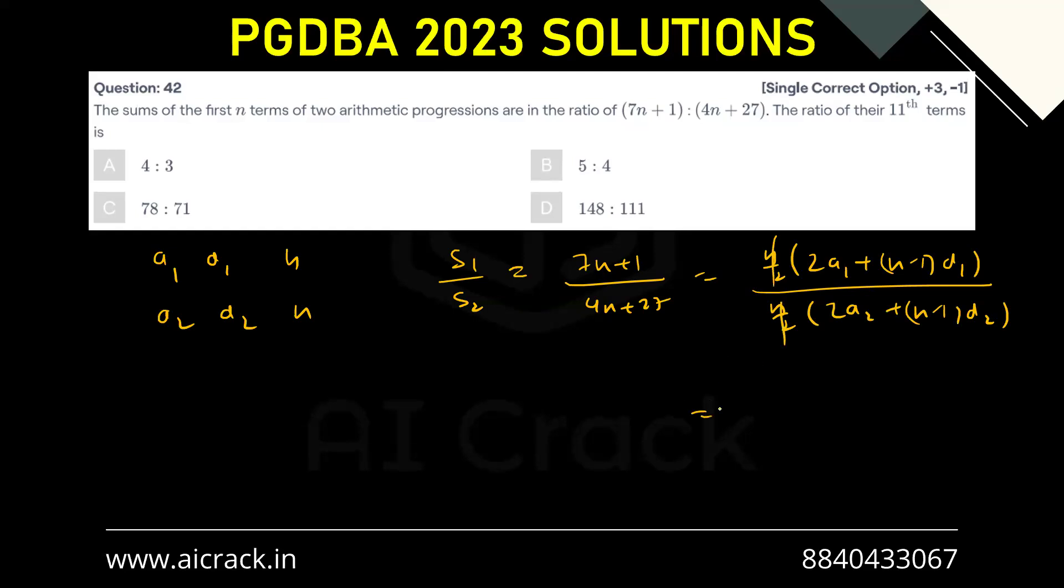Now what do we have to find? We have to find out the ratio of their 11th terms. Now we have to figure out a way to write this as 11th term.